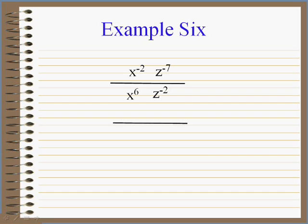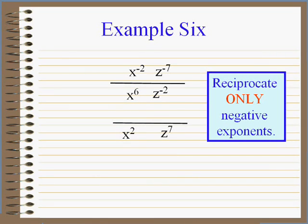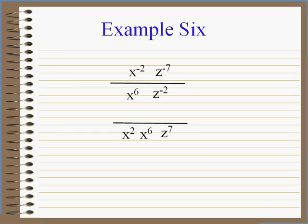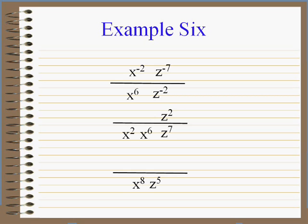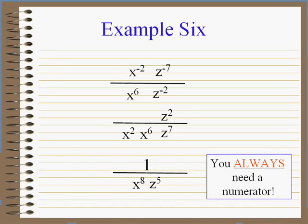Let's look at this one. The negative exponent goes down; just reciprocate. z to the minus seven goes in the denominator. x to the sixth is a positive exponent — leave it alone. z to the minus two gets reciprocated upstairs. These two get together, and the other two cancel. The answer goes where the largest one was: seven minus two is five, giving z to the fifth. But be careful — you need a numerator, so you add a one. Warning: don't forget the one!